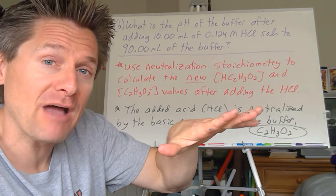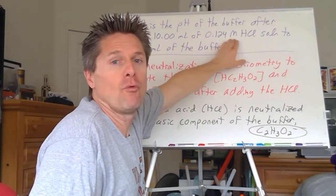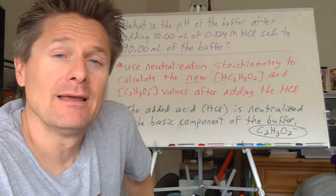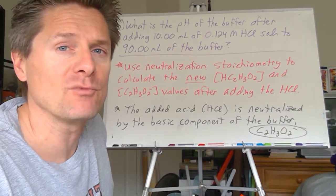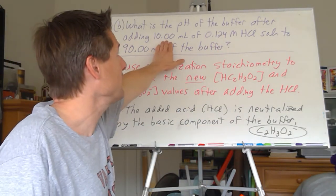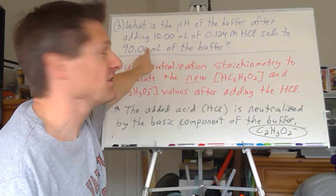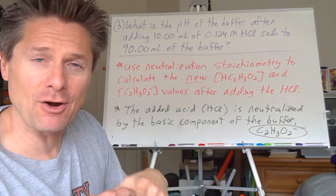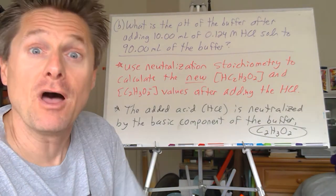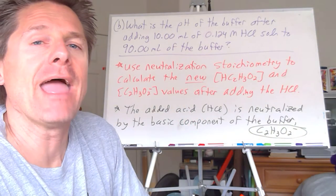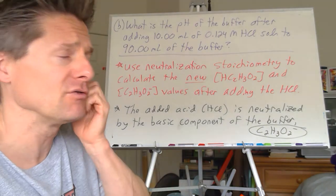Part B: what if we add 10.00 milliliters of 0.124 molar hydrochloric acid — a strong acid — to 90.00 milliliters of the buffer solution? That gives 100.00 milliliters total after mixing. There's a dilution factor that drops all concentrations, but concentrations also change because of neutralization.